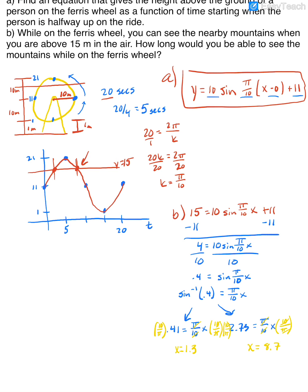Those are representing seconds. So from 1.3 seconds all the way to 8.7 seconds, you'll be able to see those mountains because you'll be above 15 meters on the Ferris wheel. If I'm writing this, it wants an interval. So I want to put this in interval notation. From 1.3 to 8.7, I would be able to see the mountains. Now notice it said above 15 meters, it didn't say at 15 meters and above. That's why I don't have brackets here. Parentheses meaning at 15, I'm probably in between being able to see them and not seeing them.